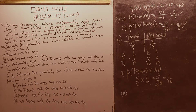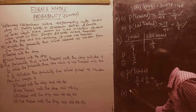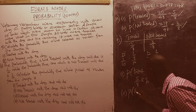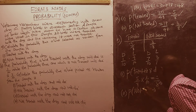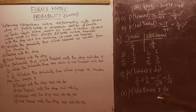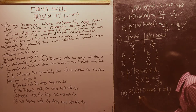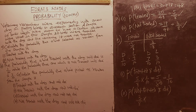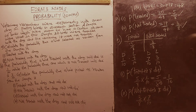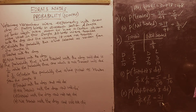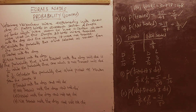Roman numeral 2 of Part B: the probability that a bird is not treated and will die. We take the probability that the bird is not treated, which is 3 over 8, multiplied by the probability of that bird dying, which is 7 over 10. Multiplying the numerators: 3 times 7 equals 21; multiplying the denominators: 8 times 10 gives 80. So the answer is 21 over 80.